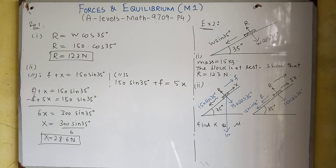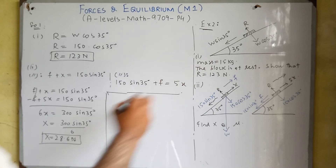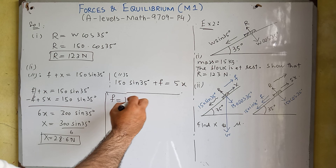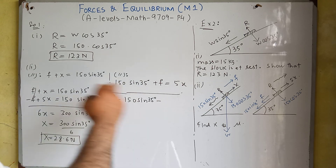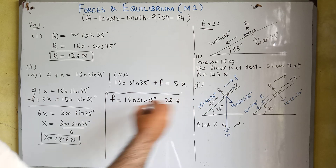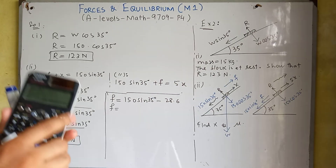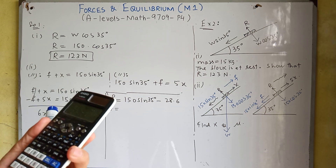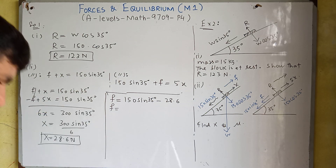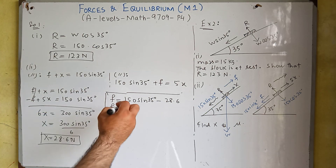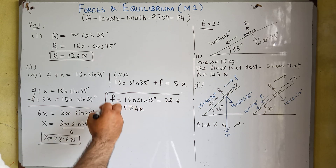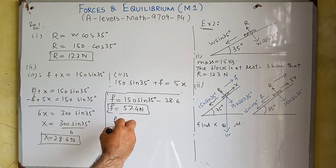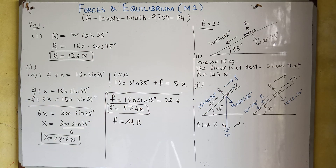X equals 28.6 newton. Substituting this back, the friction force F equals 150 sin 35 minus 28.6, giving F equals 57.4 newton. Since friction equals the coefficient of friction multiplied by the reaction force, we can now find the coefficient of friction.